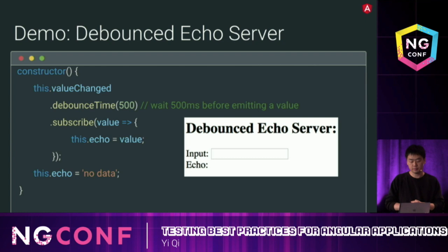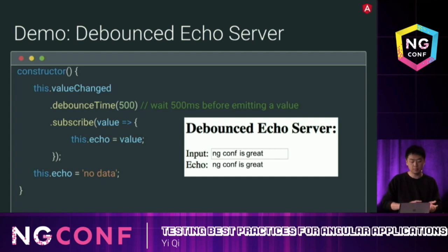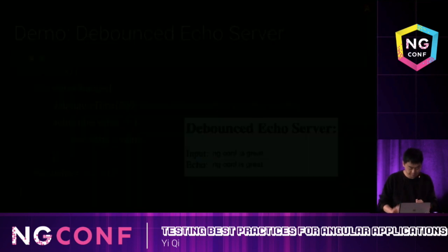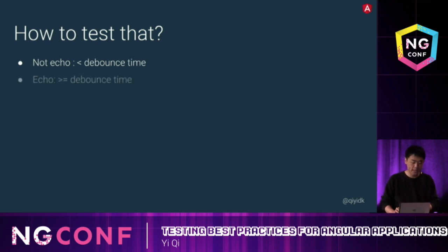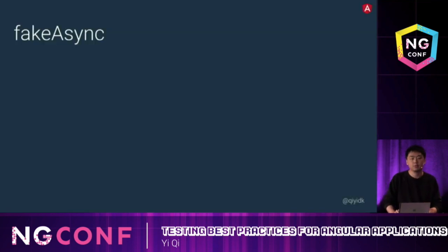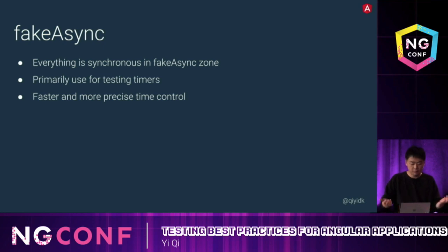This is called the debounced echo server. It looks the same as before, but instead of calling setTimeout directly, we've added a debounce time. The echo won't be updated until we stop typing for 500 milliseconds. To test this properly, we need accurate time control — we need to verify it won't echo if we stop less than the debounce time, and it should echo if we stop at or beyond the debounce time. In Angular, we provide a helper called fakeAsync.